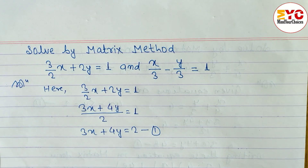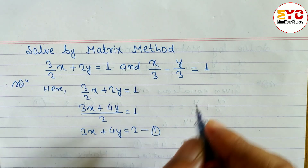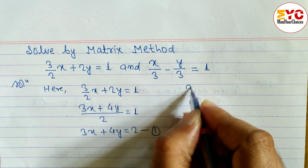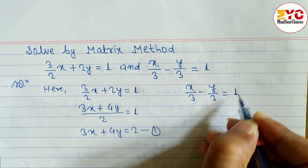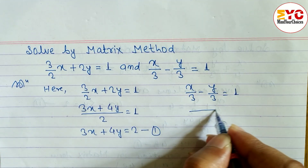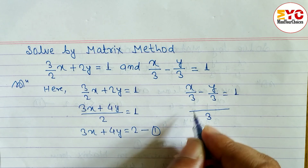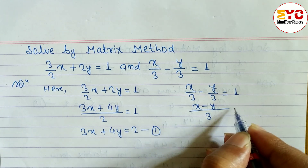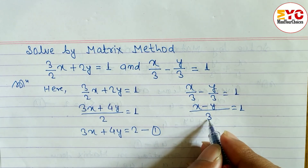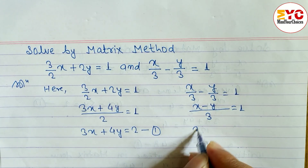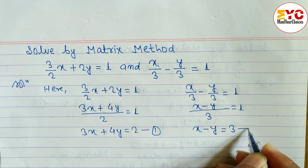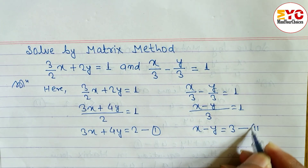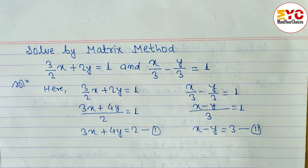Similarly, the second equation is x/3 minus y/3 equals 1. Taking LCM as 3, we get x minus y equals 3 after cross-multiplying. This is equation 2. So we now have equation 1: 3x + 4y = 2, and equation 2: x − y = 3.